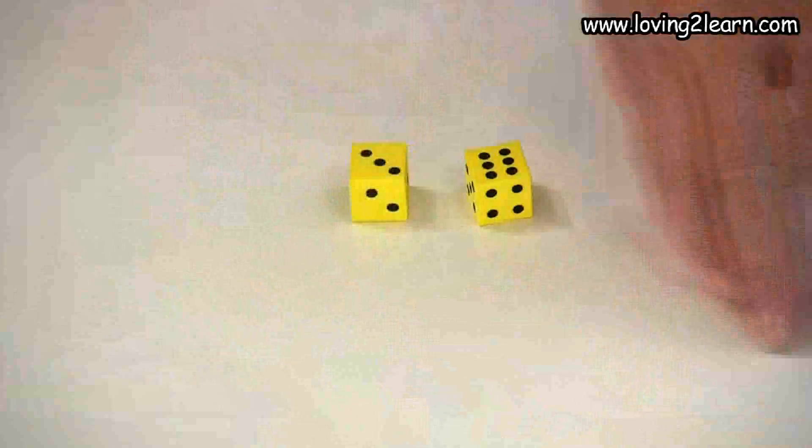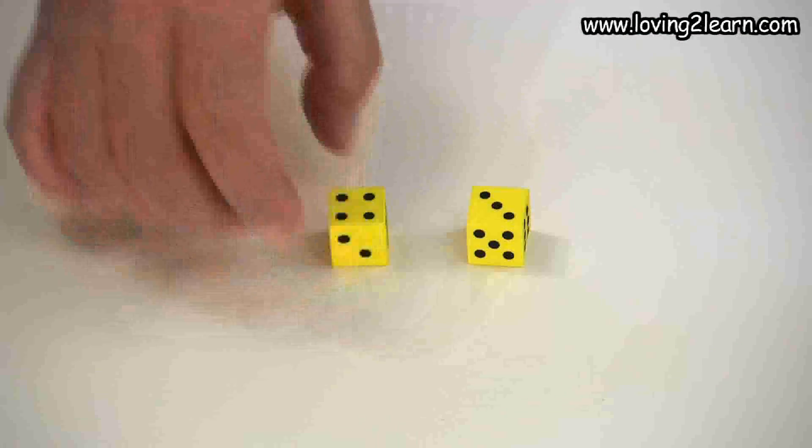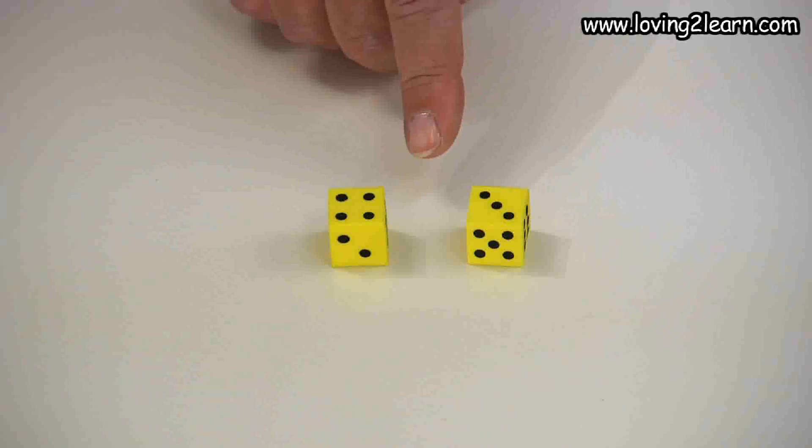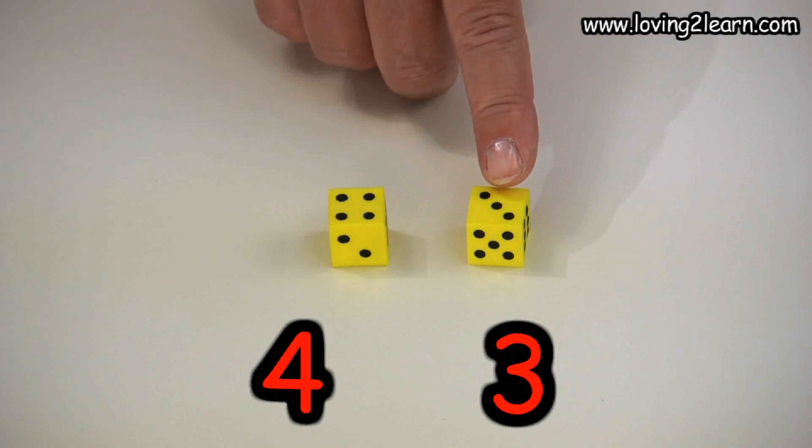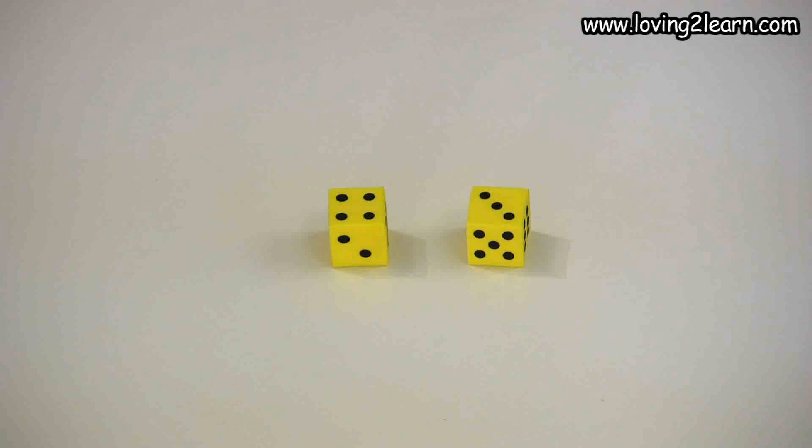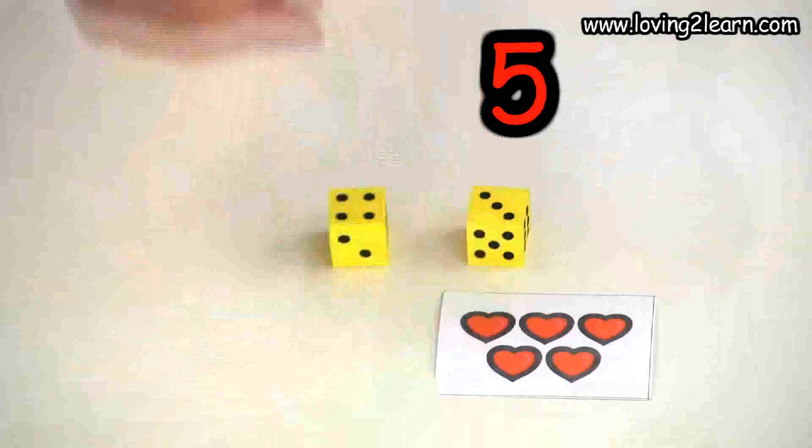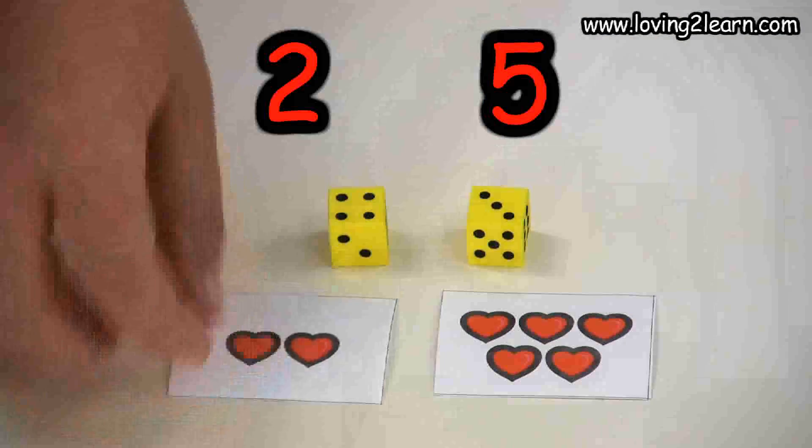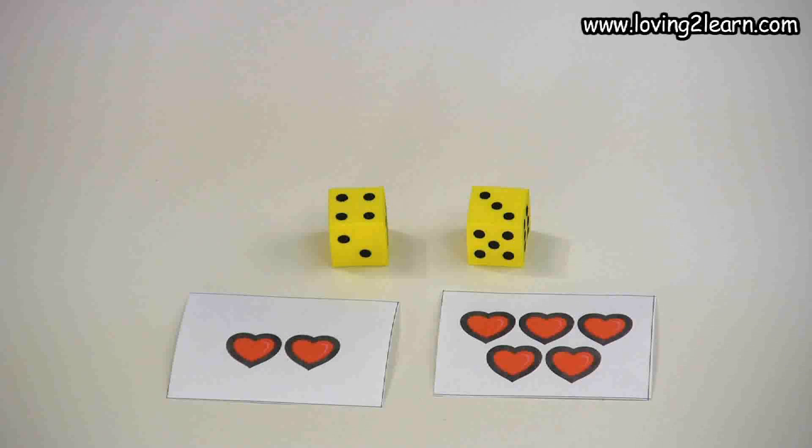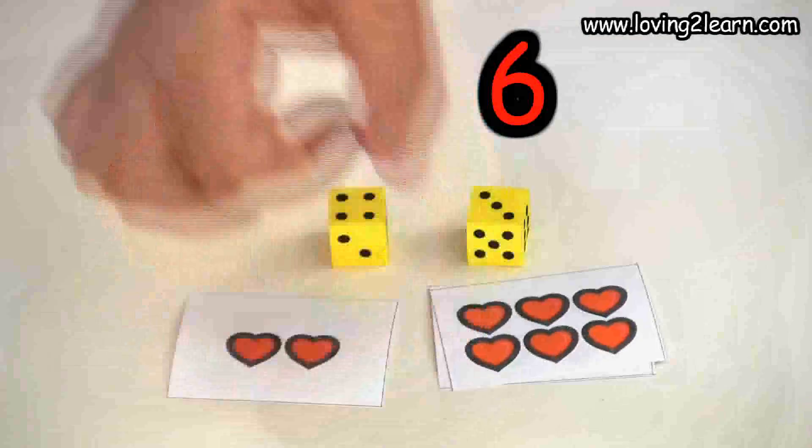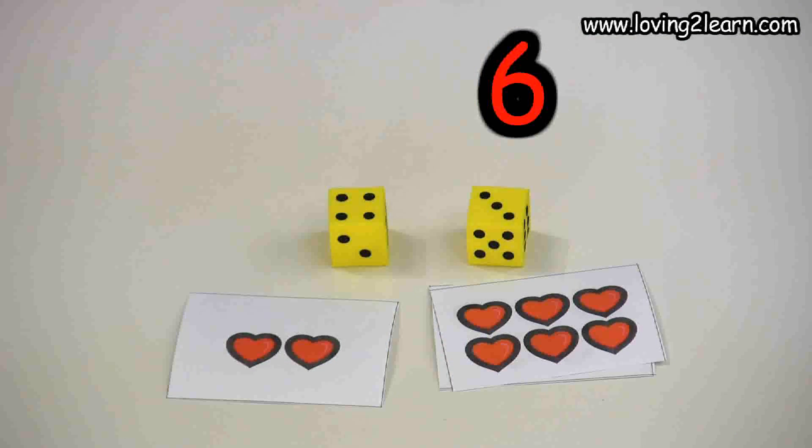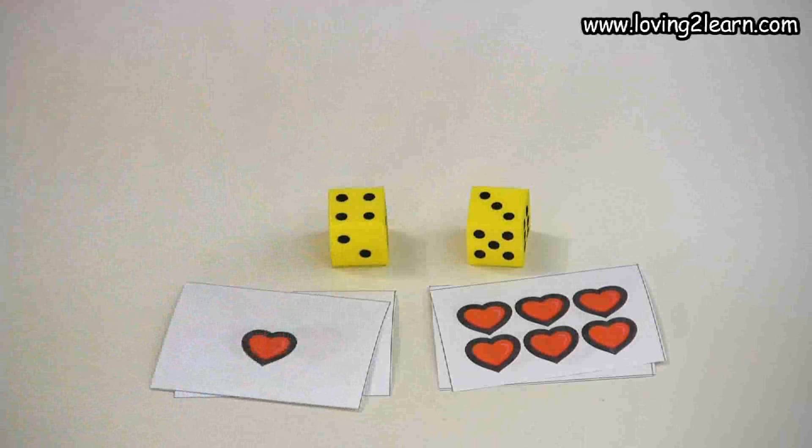We'll take those cards aside and we'll do the dice one more time. Here we have the combination of four and three, which will equal seven. Let's do five and two, which equals seven. Then let's do six and one, which will equal seven.